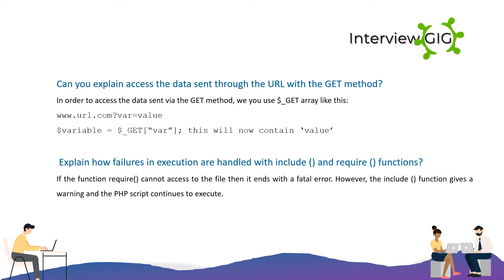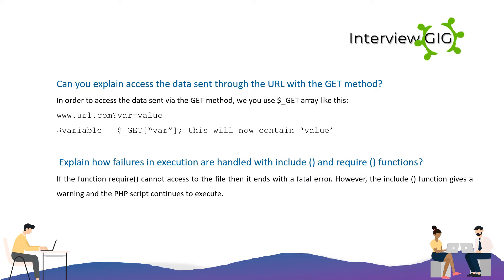Can you explain how to access the data sent through the URL with the GET method? In order to access the data sent via the GET method, we use the $_GET array. For example: www.url.com?var=value — then $variable = $_GET['var'] will now contain 'value'.